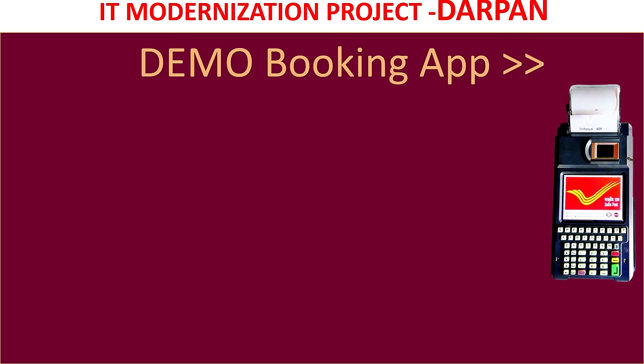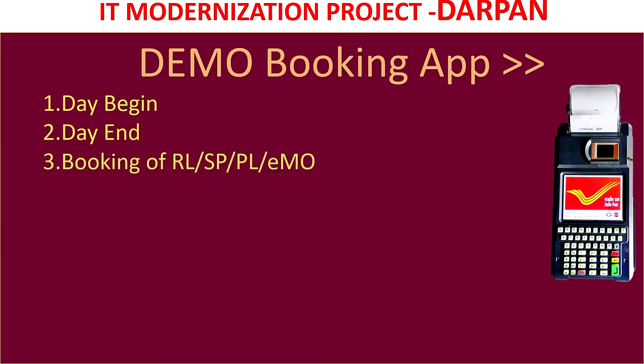There are three apps in DARPAN. One is the demo booking app, the second is the delivery app, and the third is the common app. The transactions that can be done in the demo booking app are day begin, day end, booking of RLC, speed post, parcel, and EMO. These things will be done in the demo booking app. For example, they may ask: booking of EMO can be done in which app - demo booking app, common app, or delivery app?